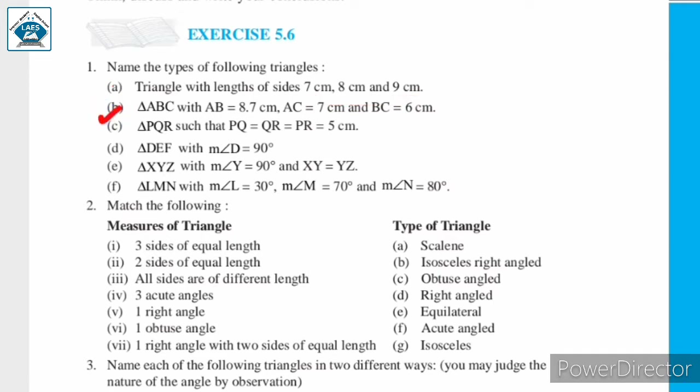Next, triangle ABC with AB = 8.7 cm, AC = 7 cm, and BC = 6 cm. In this triangle also, no two sides are equal. Since all the sides are unequal, triangle ABC is a scalene triangle.